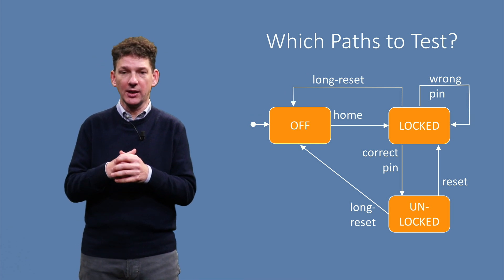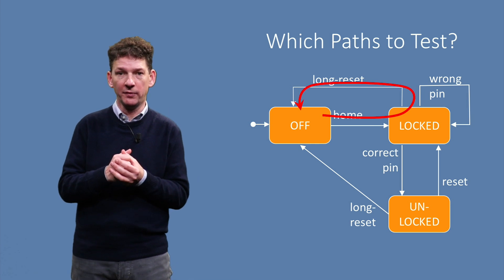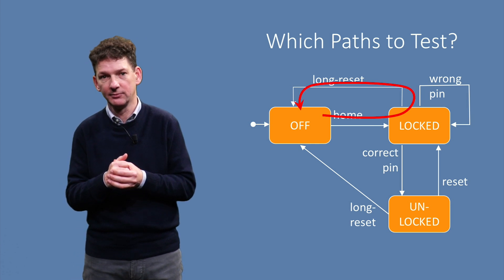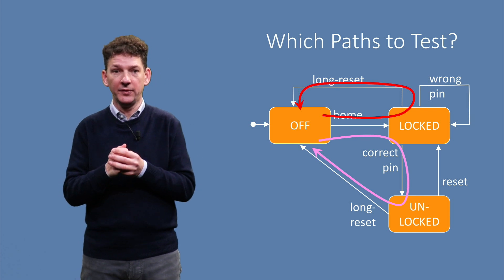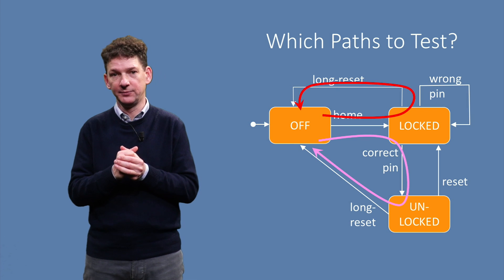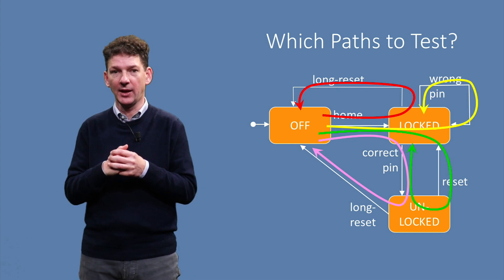In the graph, these paths can also be displayed. For example, here is the red path from OFF to LOCKED and back. The pink option goes from OFF via LOCKED and UNLOCKED back to OFF. The remaining two paths are shown in green and yellow.